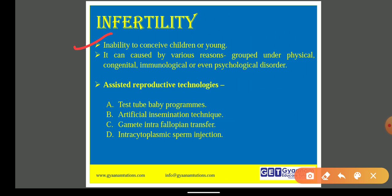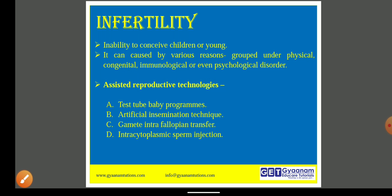Infertility is nothing but the inability to conceive children or young. Infertile conditions are generated in the body and thus they are unable to conceive. There can be a problem inside the male body or there can be a problem with the female body. The reasons can be grouped under physical conditions, congenital, immunological, or even psychological disorders.